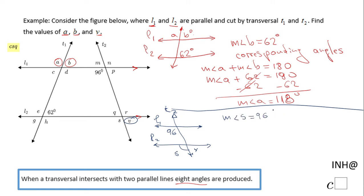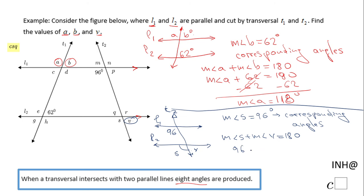The measure of angle S is 96 degrees because they are corresponding angles. Now, the same idea: angle S and angle V are supplementary — they are a linear pair and they form the second line L2. So the measure of angle S plus the measure of angle V equals 180 degrees. Since angle S is 96 degrees, we just need to subtract 96 from 180 to find angle V.